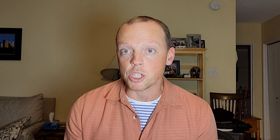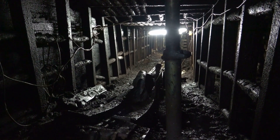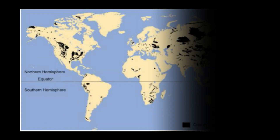Sometimes coal is much deeper and we have to build mine shafts and do underground mines, which is what you might think of when you think of coal. As I'll explain later in this video, some of the best, highest quality coal is really deep down, so we build these mine shafts and send people down there to dig it out and bring it back to the surface. Here's a map of different coal deposits found worldwide — you can see it's found a lot in the northern hemisphere, and there's a lot less in the southern hemisphere. One of the reasons we use so much coal is we can find it almost anywhere.